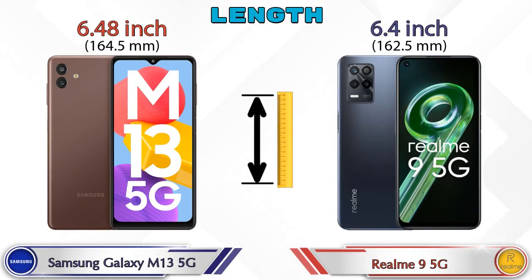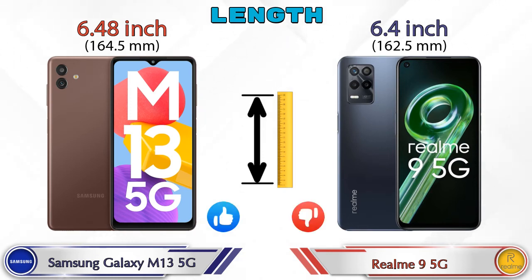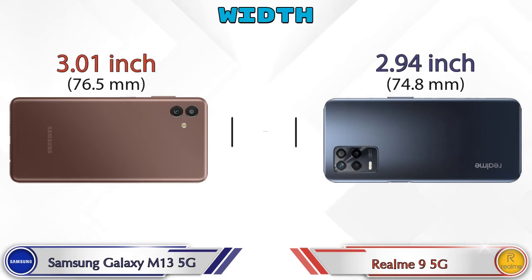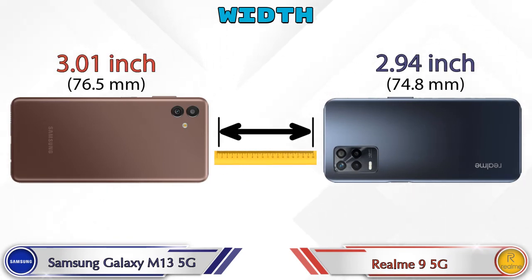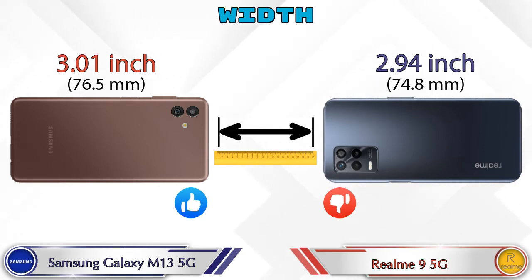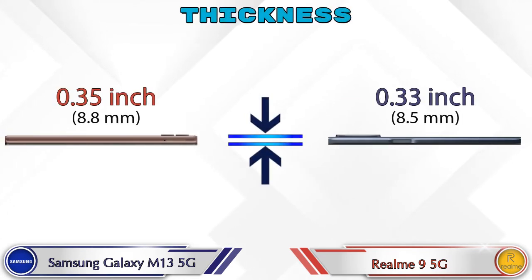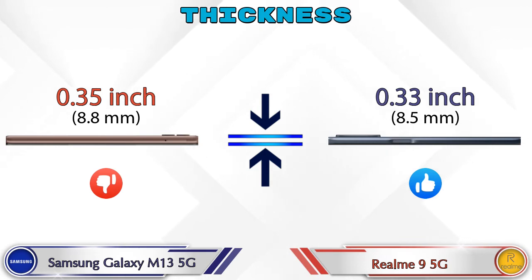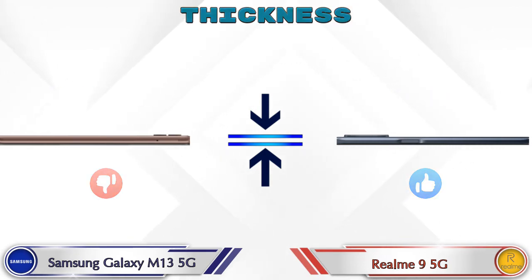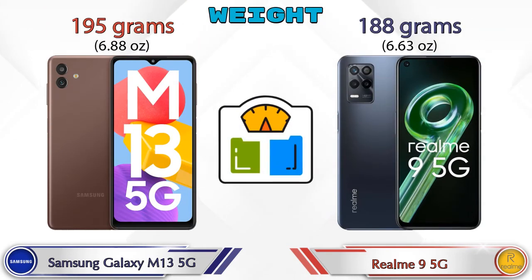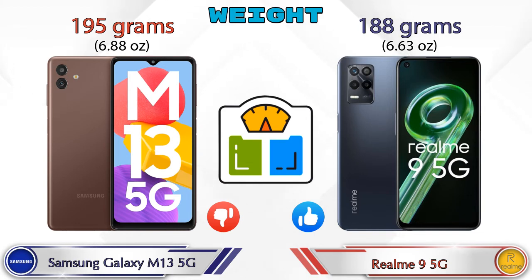Now let's check the dimensions. Galaxy M13 5G has a length of 6.48 inches and Realme 9 5G is 6.4 inches. Width in Galaxy M13 5G is 3.01 inches and in Realme 9 5G it's 2.94 inches. Thickness: Galaxy M13 5G is 0.35 inches and Realme 9 5G is 0.33 inches. Weight: Galaxy M13 5G is 195 grams and Realme 9 5G is 188 grams.